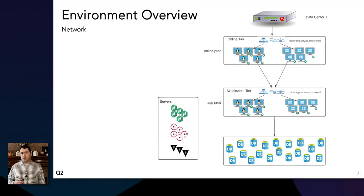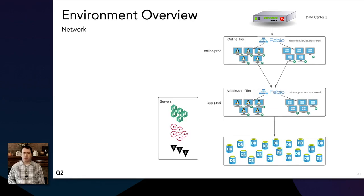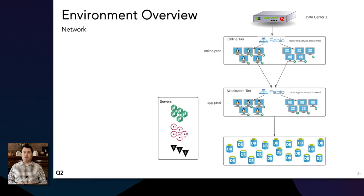Our networks are heavily segmented and firewalled and we align Nomad node classes to these different networks. We make use of the constraint parameter within jobs to match workloads to their appropriate networks. We also use Consul network segments to align segments to the different networks, so we don't send full gossip traffic across firewall boundaries and tiers. Another thing we enjoy about Nomad is we aren't really required to use overlay networks — we mostly use bridge and host mode at the Docker level, which helps keep things simple. Nomad now does have CNI support, which is something we may look into in the future.